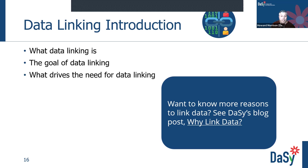The data linking introduction section covers what data linking is — the process for connecting information about a record, such as a child or service provider, from one data source to another. It also describes the goal of data linking: to create and analyze a new dataset that the program can use to answer important questions for program improvement. Ultimately, data linking is driven by the need to answer one or more complex questions that program staff cannot answer with only Part C or Part B 619 data. Check out the 'Why Link Data' blog linked in the slides for more.